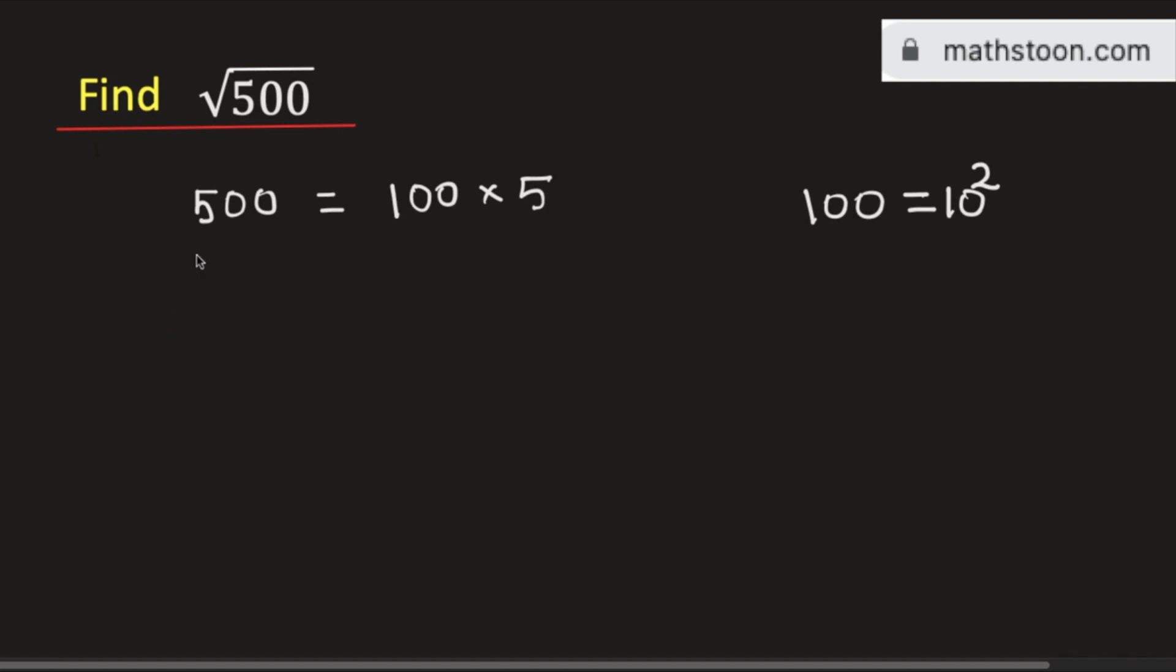Now taking square root on both sides we will get square root of 500 is equal to square root of 100 times 5.